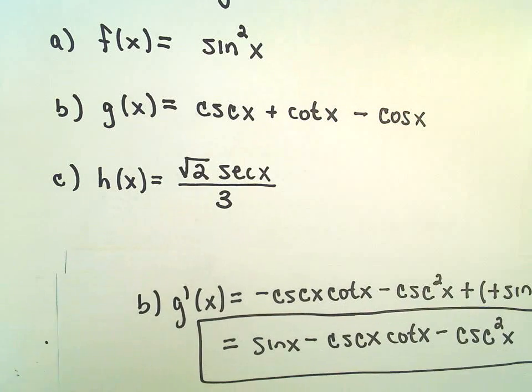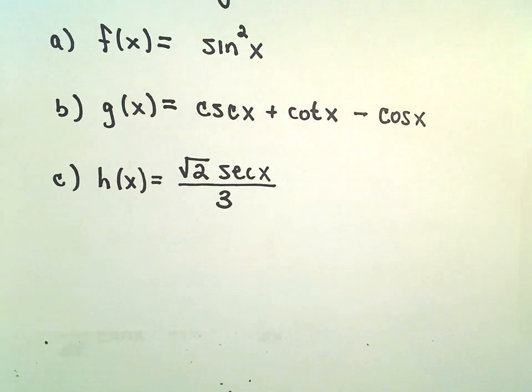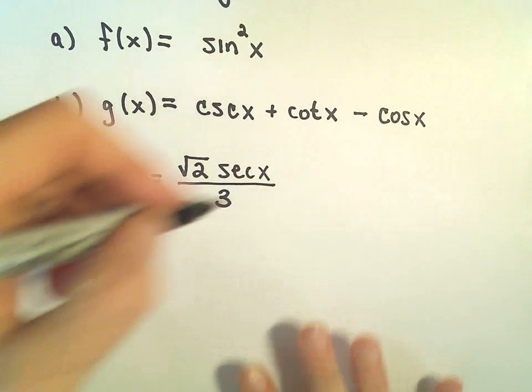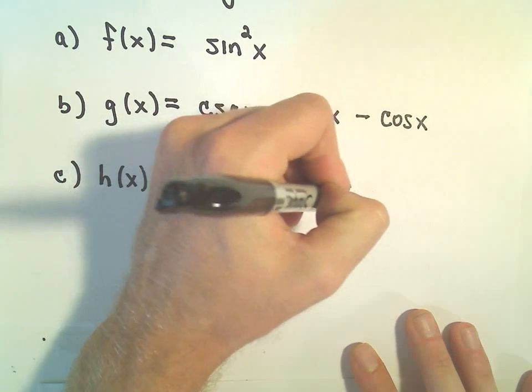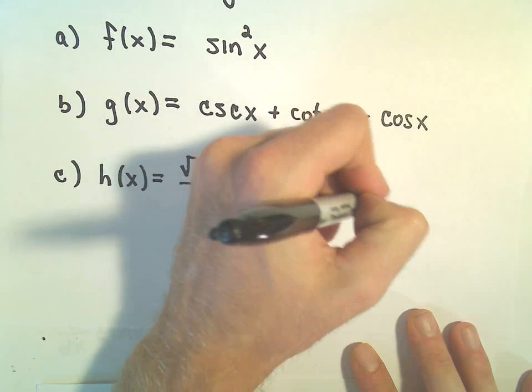And let's look at our last example here, part C. Again, pretty straightforward as far as derivatives go. We can probably just squeeze this one in here. This is just square root of 2 over 3 times secant x.